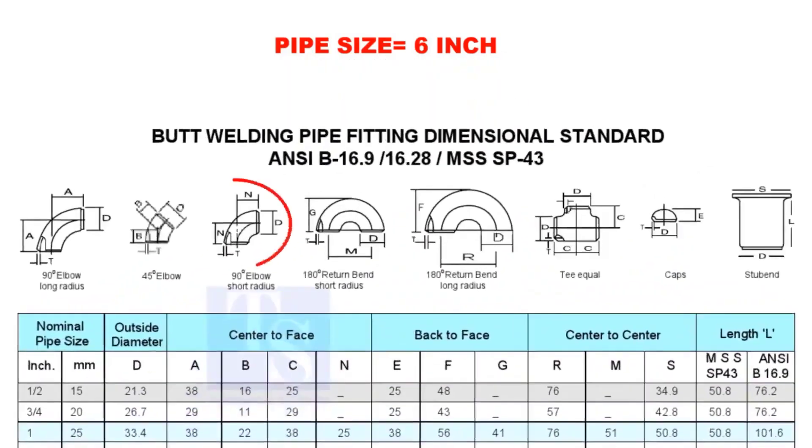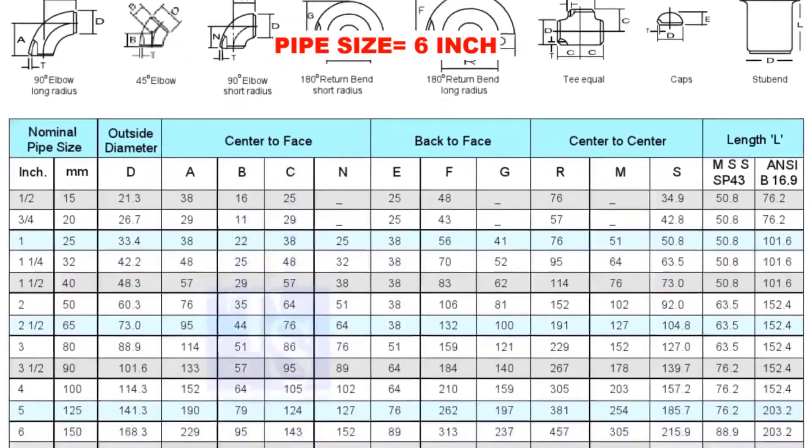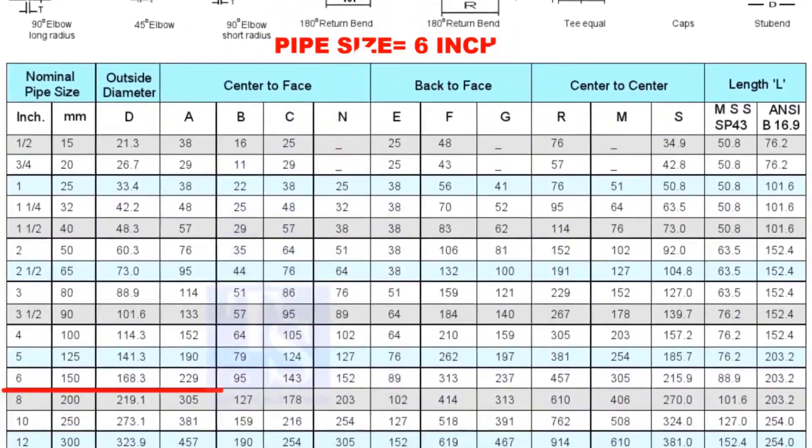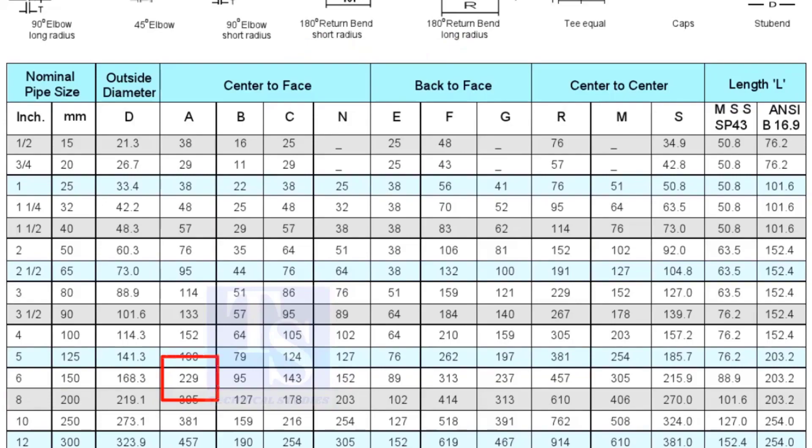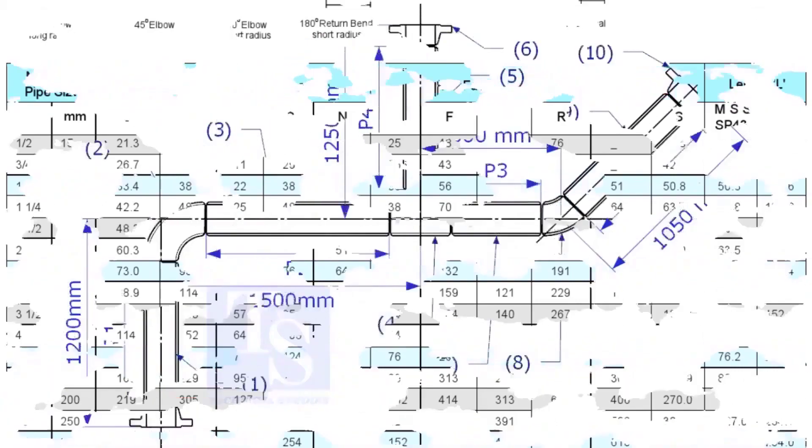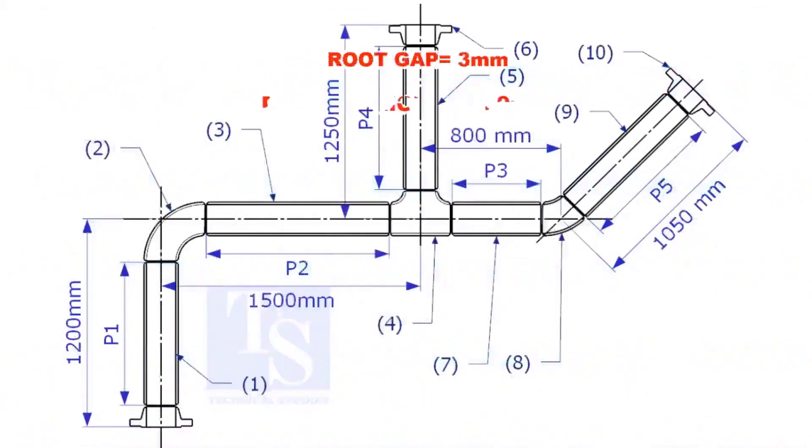Check the takeoff length of the elbow. It is 229mm. Assume the root gap is 3mm.